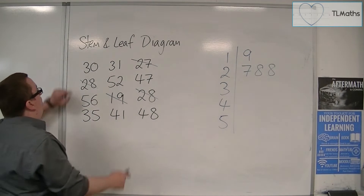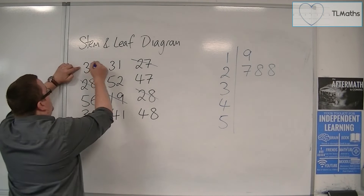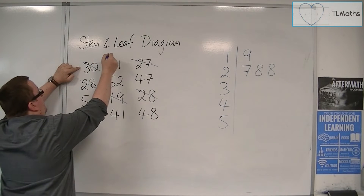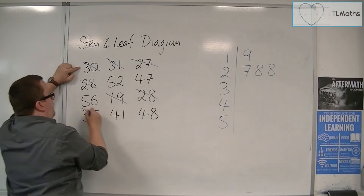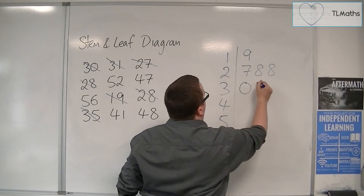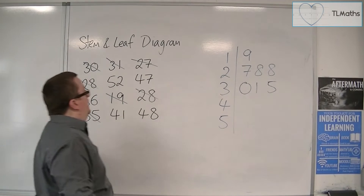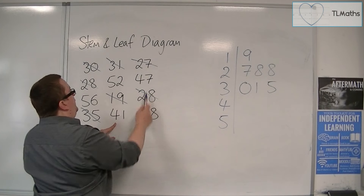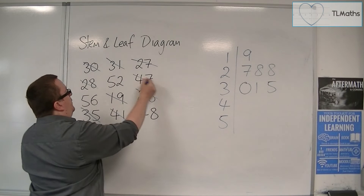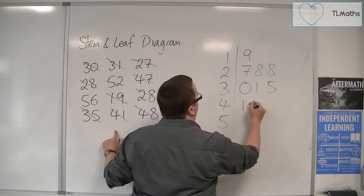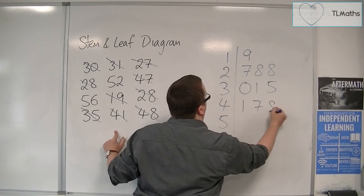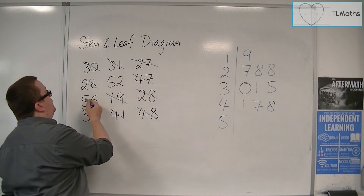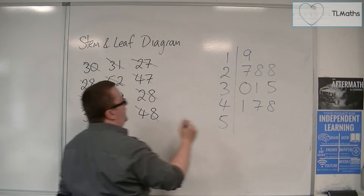For the 30s, we have 30, 31, and 35, so 0, 1, 5. For the 40s, we have 41, 47, 48, so 1, 7, 8. And then for the 50s, we have 52 and 56, so 2 and 6.